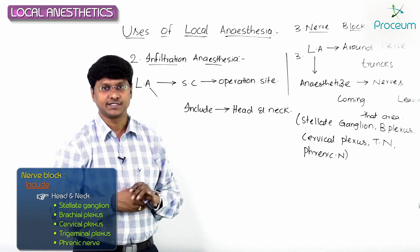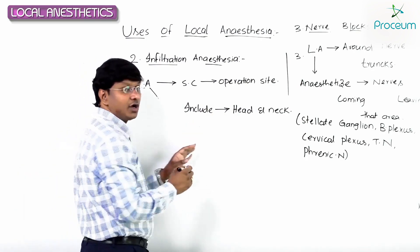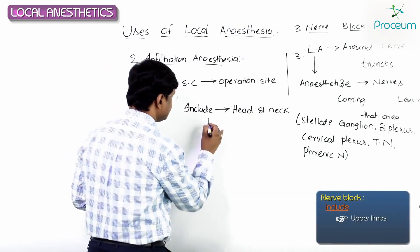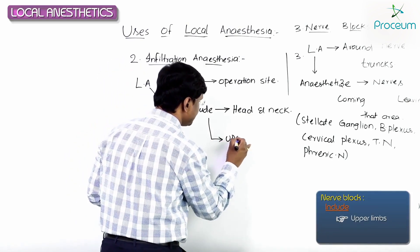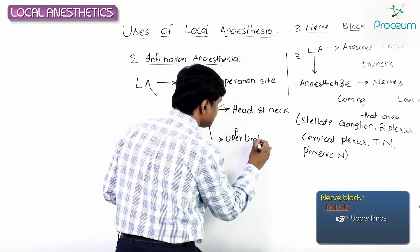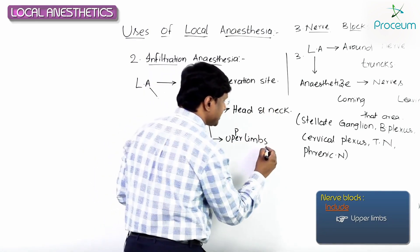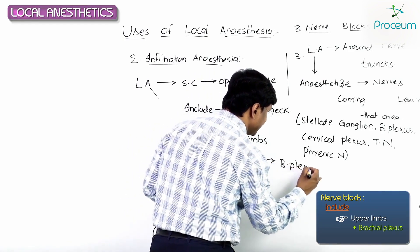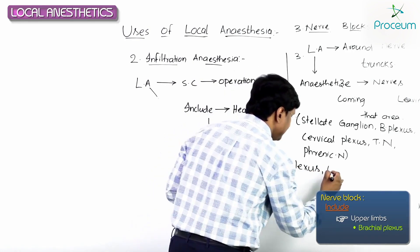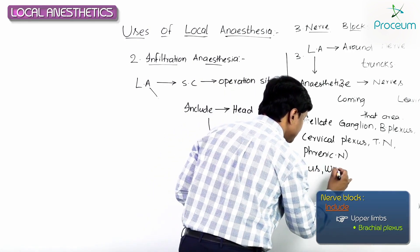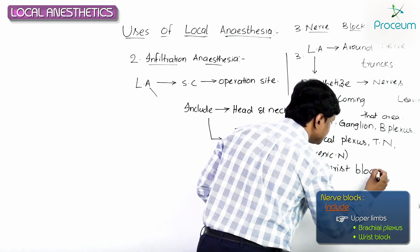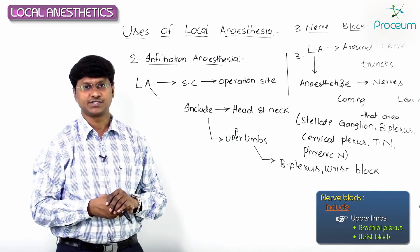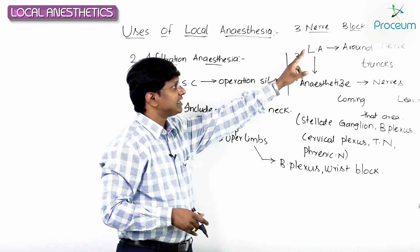The local anesthetic drug can also be injected into the upper limbs. When injected into the upper limbs, the blocks which can happen include a block to the brachial plexus, and we can also have a wrist block — blockage around the wrist.